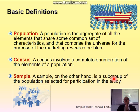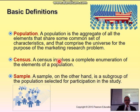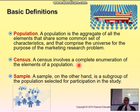A population is the aggregate of all elements that share some common set of characteristics and that comprise the universe for the purpose of the marketing research problem. So the population is the people you are going to study. For example, for Pampers it's all moms, or all centers that buy Pampers for clients. For yogurt, it may be every household in Yemen. For e-commerce, it's all people who use the internet. For telecommunications, it's people who have a mobile phone. Census involves a complete enumeration — a list of all elements of a population.